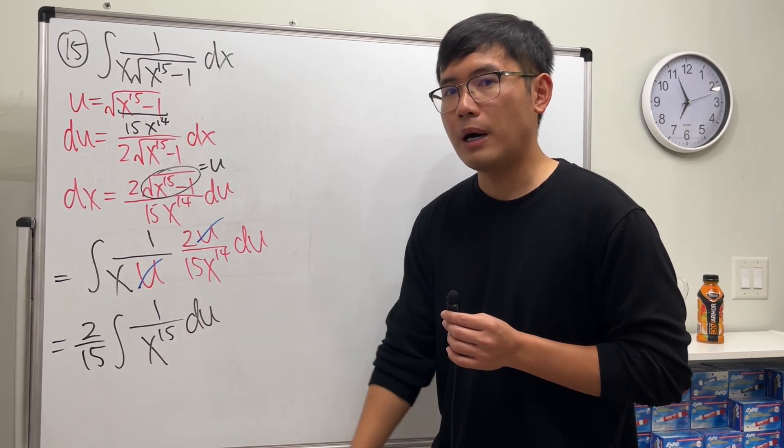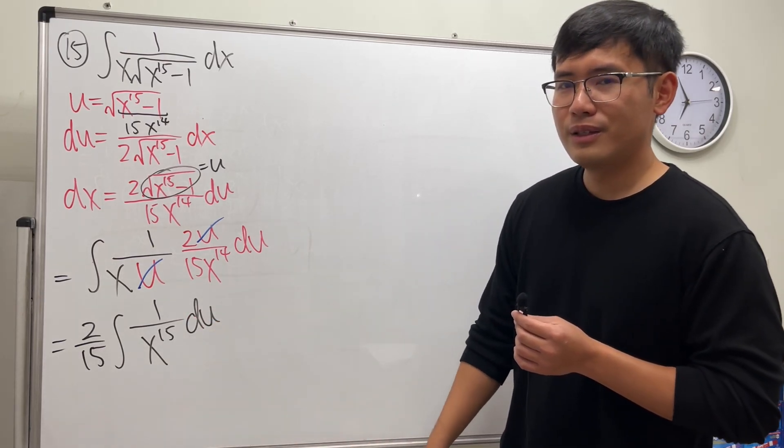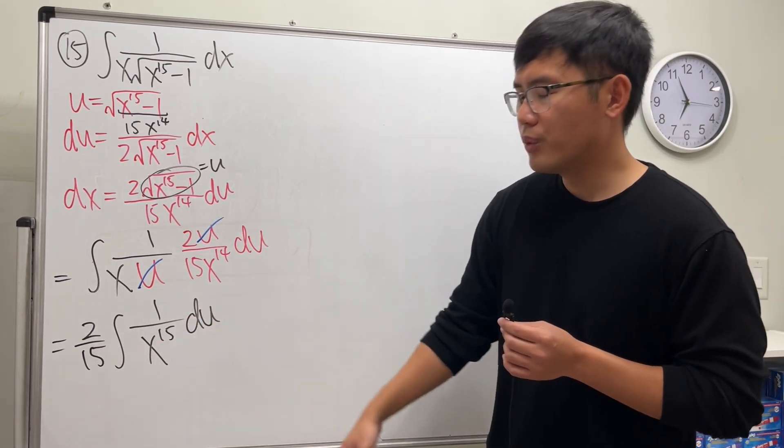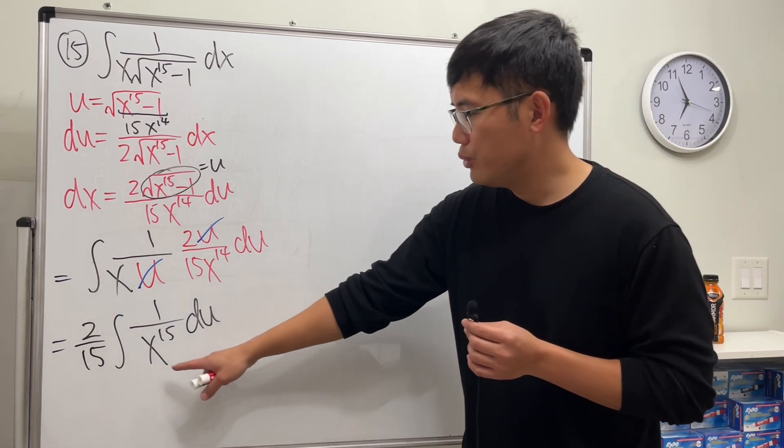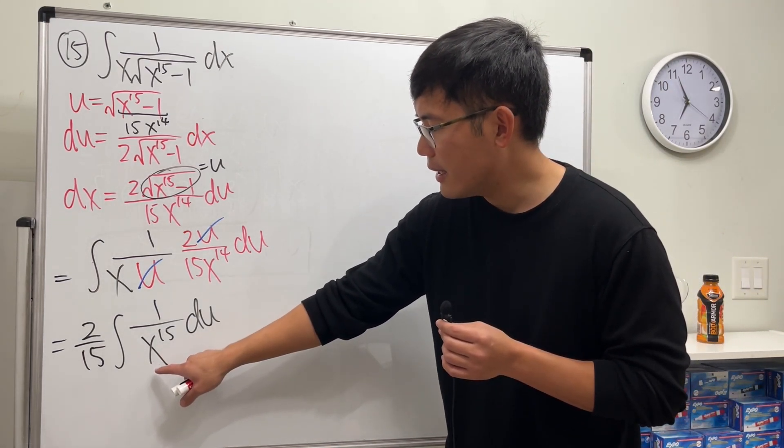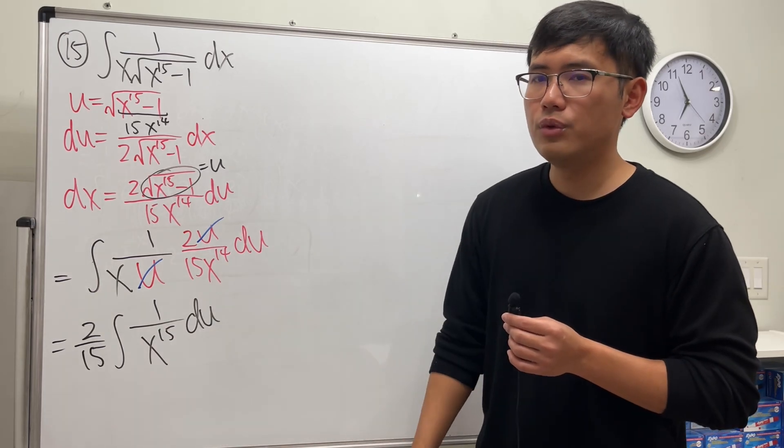The reason is this is x, this is u. We cannot do the reverse power rule. In fact, we cannot integrate x in the u world. There's a connection between x and u. We will have to rewrite the x to the 15 in terms of u.